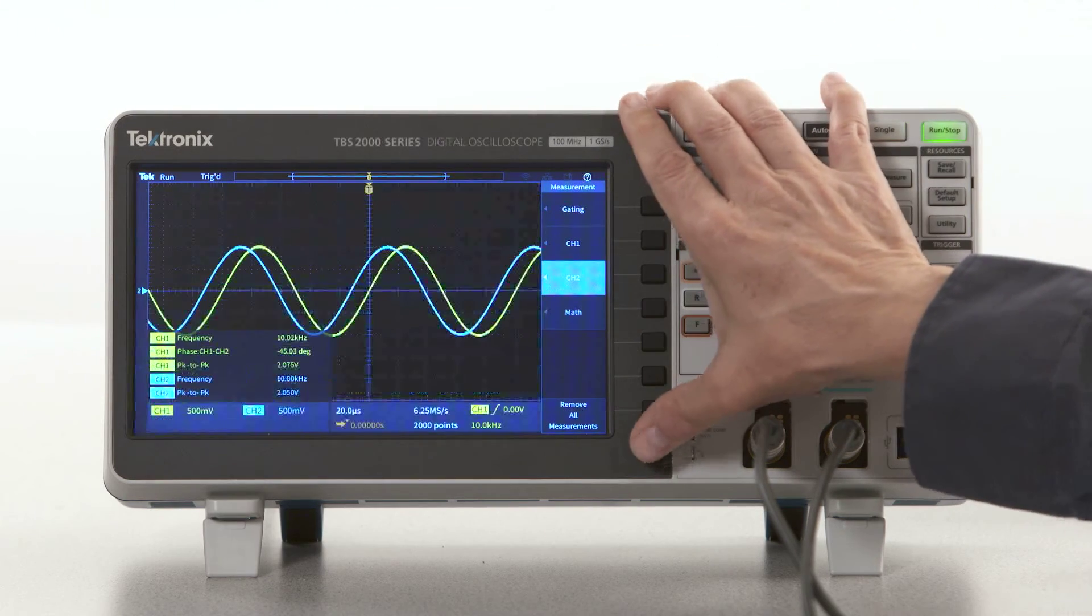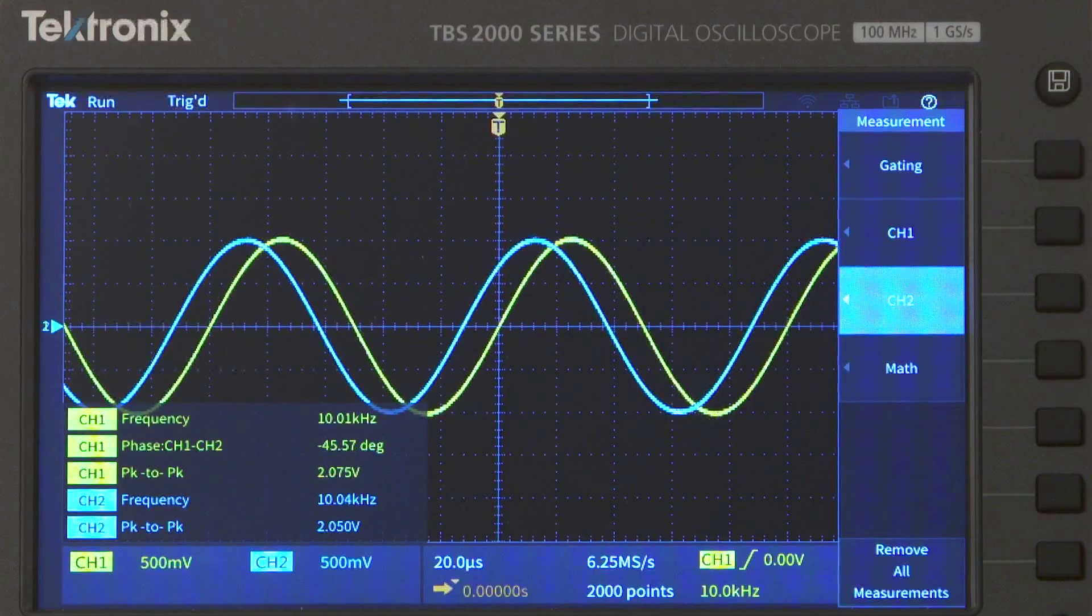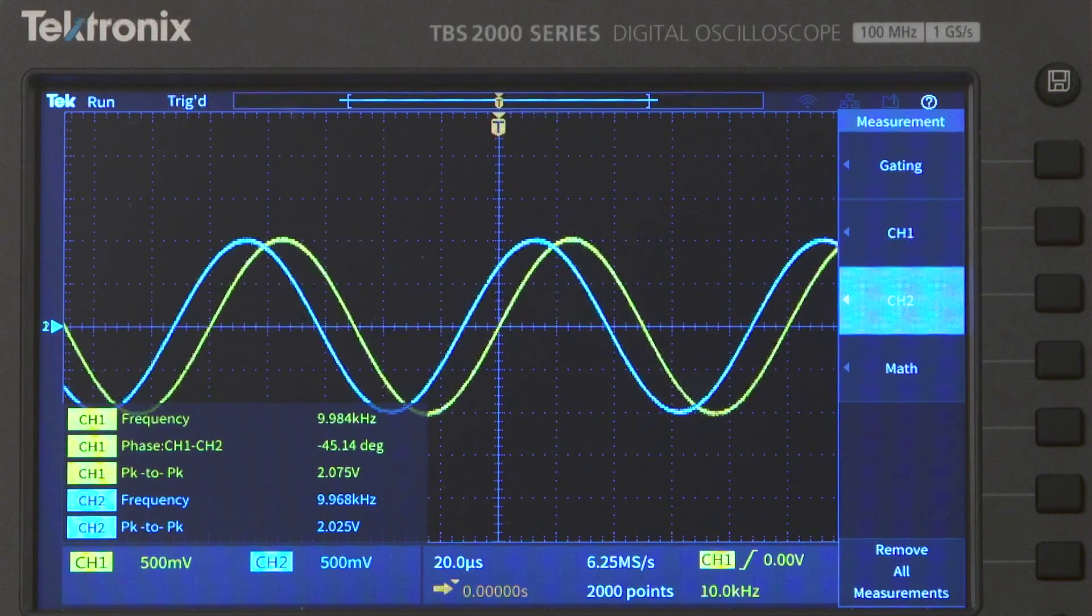Notice that the phase measurement gives a negative reading, which means that channel 1 is leading channel 2. The measurements for channel 2 are shown in light blue, the same color as the waveform.